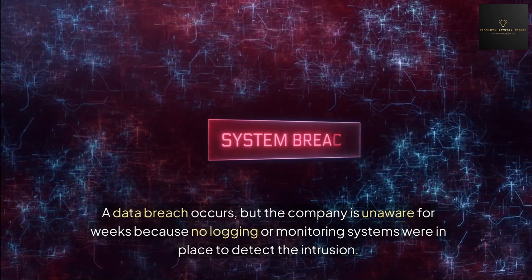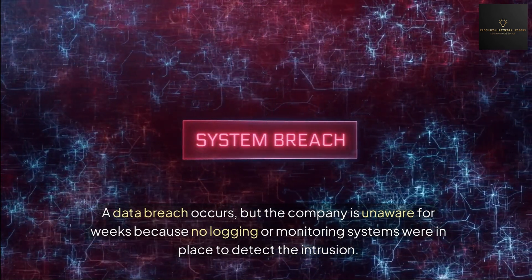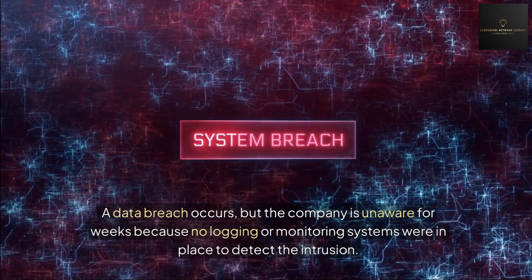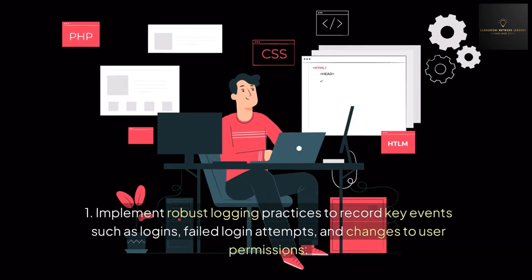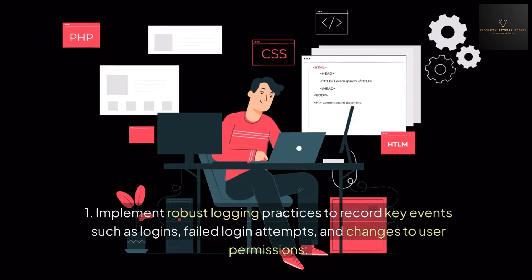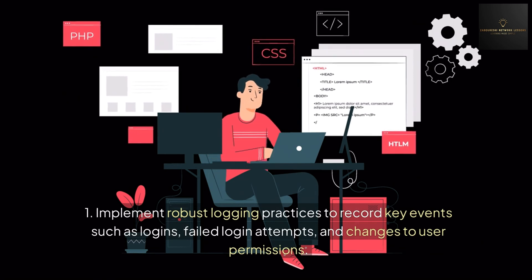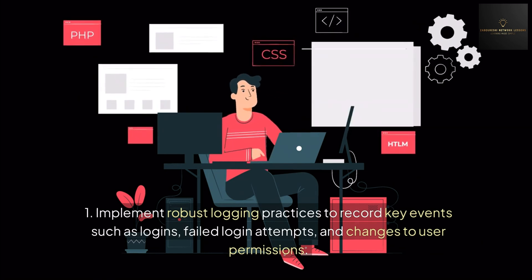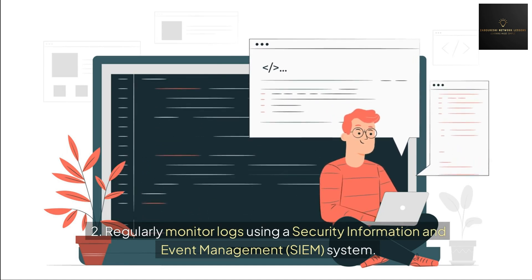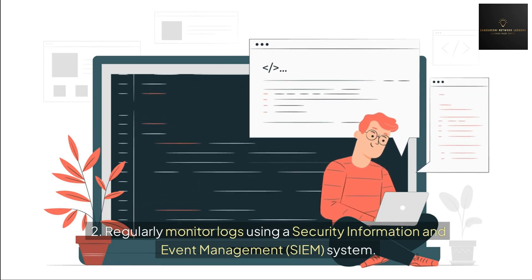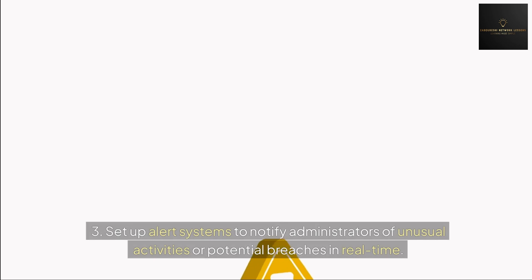For example, a data breach occurs but the company is unaware for weeks because no logging or monitoring systems were in place to detect the intrusion. How to prevent it: First, implement robust logging practices to record key events such as logins, failed login attempts, and changes to user permissions. Second, regularly monitor logs using a Security Information and Event Management (SIEM) system.